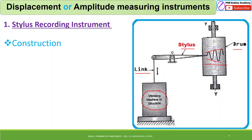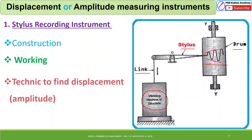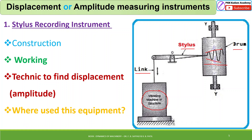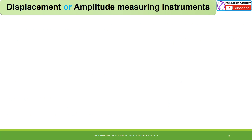However, this instrument cannot measure high frequency vibrations. The stylus itself has a natural frequency, and when the vibrating body operates at high frequency, the stylus also vibrates, creating erroneous readings — the measured amplitude includes the stylus's own amplitude. Therefore, the stylus recording instrument is used only for low frequency and low acceleration applications.